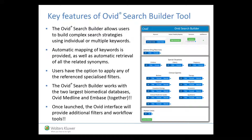The Ovid Search Builder allows users to build complex search strategies using their own keywords. Automatic mapping of those keywords to the controlled vocabulary terms is provided, as well as automatic retrieval of all the related synonyms. Users have the option to apply any of the reference specialized filters to their strategy.